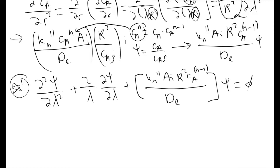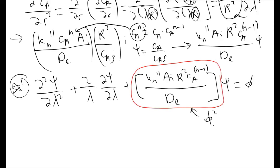The key takeaway from this derivation is the quantity in front of ψ in the last term: K_n'' · A_i · R² · C_A^(n−1) / D_e. This is the Thiele modulus squared for an nth order reaction. We kept things generic with a spherical pellet, so N can equal 0, 1, 2, 3, or 4 depending on our reaction order.